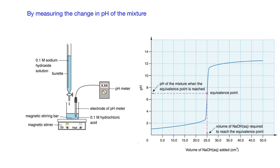First we're going to have a look at measuring the change in pH. This time, instead of using a conical flask, we are using a beaker. In the beaker we have a magnetic stirring bar, which will be attracted by the magnetic stirrer underneath, making the stirring bar spin to create swirls inside the solution. So you don't need to swirl the solution manually to mix the acid and alkali together. Instead of using an indicator, we use a pH meter with an electrode to measure the pH change throughout the process.